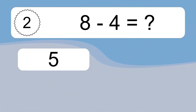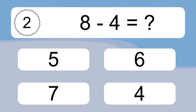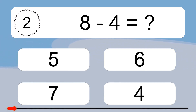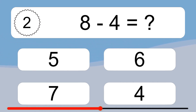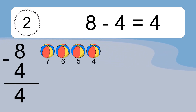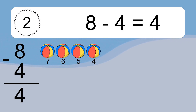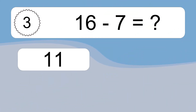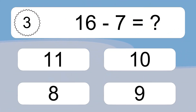8 minus 4 equals what? 8 minus 4 equals 4. Let's count it: 7, 6, 5, 4.